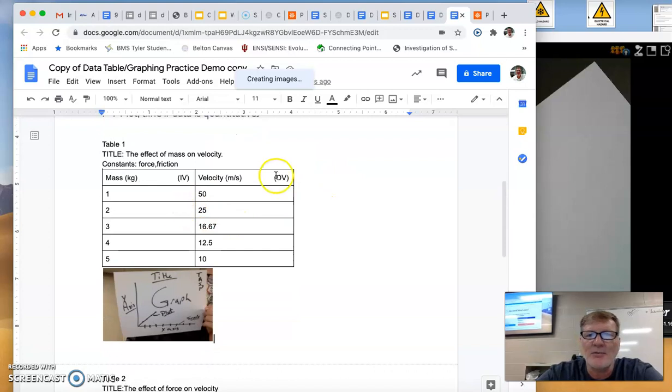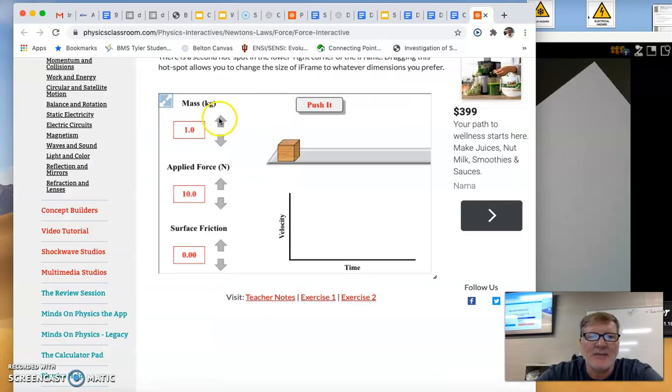So you are going to use the simulator to complete the data table. So here's a sample that I have already completed for you, but to do that, basically I have mass of 1, 2, 3, 4, and 5. This first one is just like our previous study.